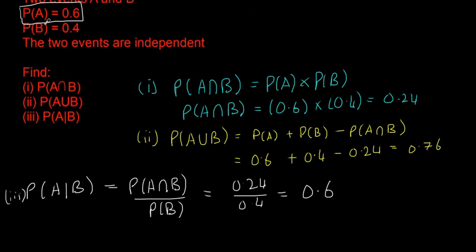The reason behind that is because the events are independent. Knowing that one of them is going to happen or is true doesn't affect the other one. The conditional probability only really matters for dependent events. For independent events, you should get the same answer.